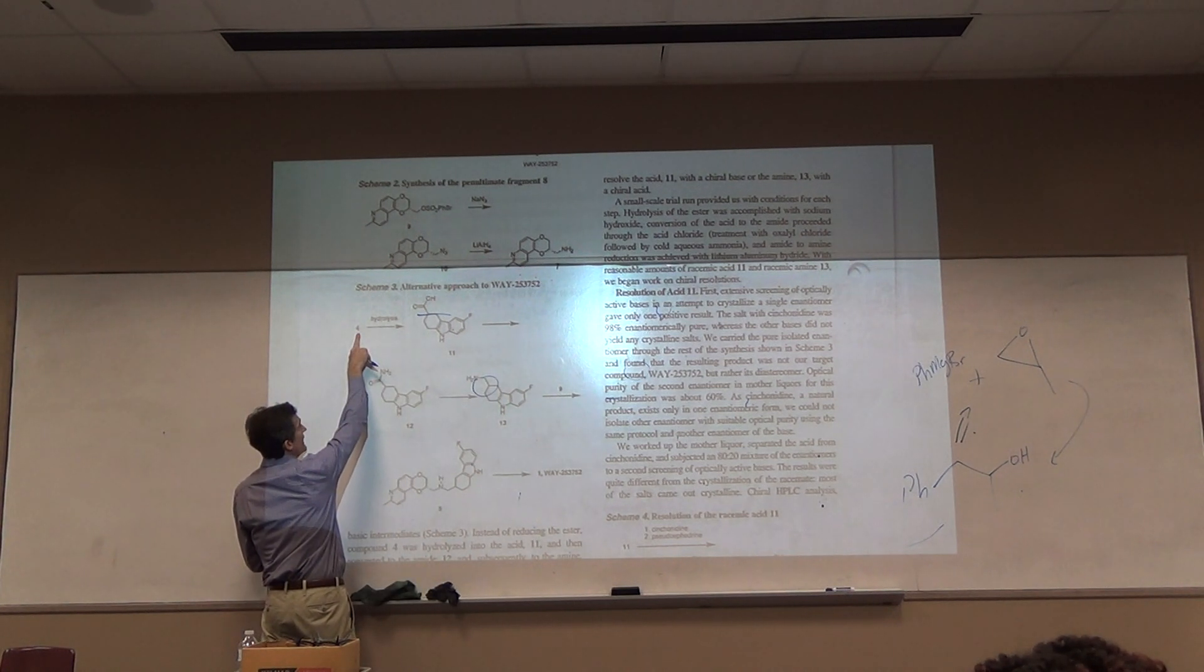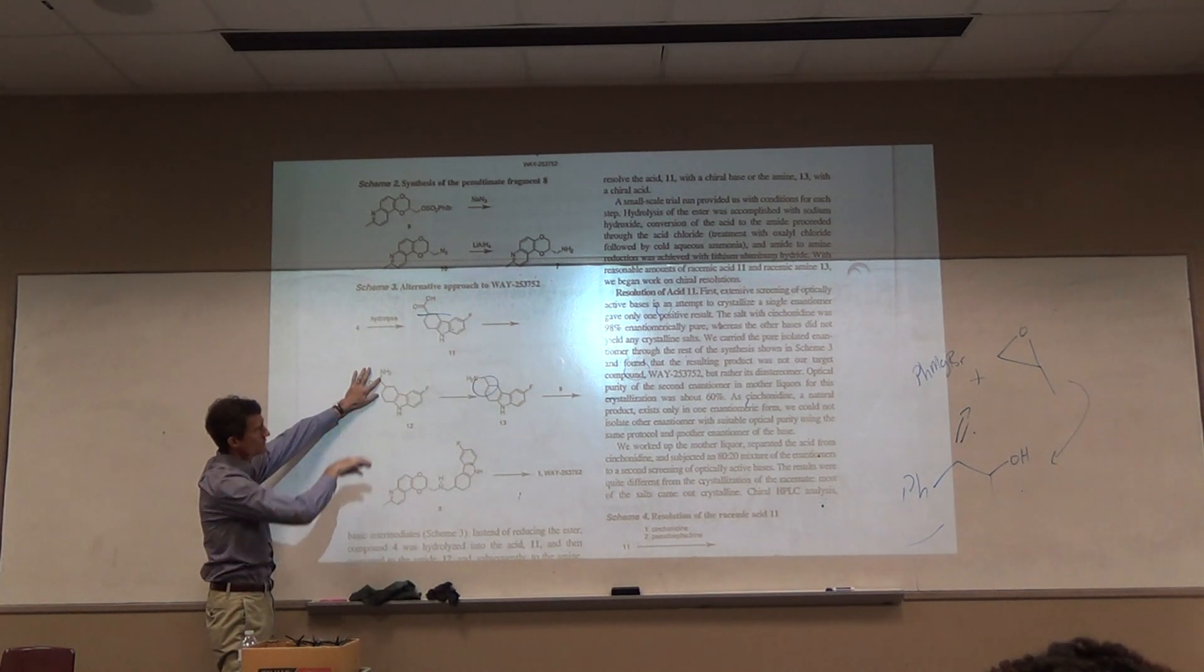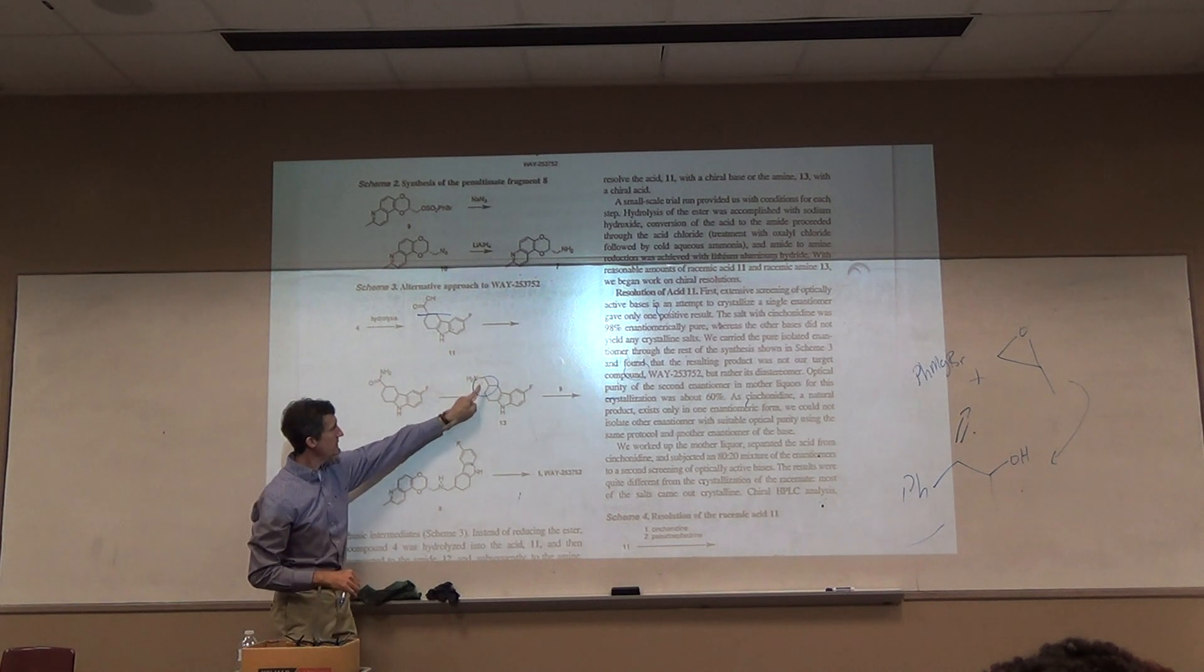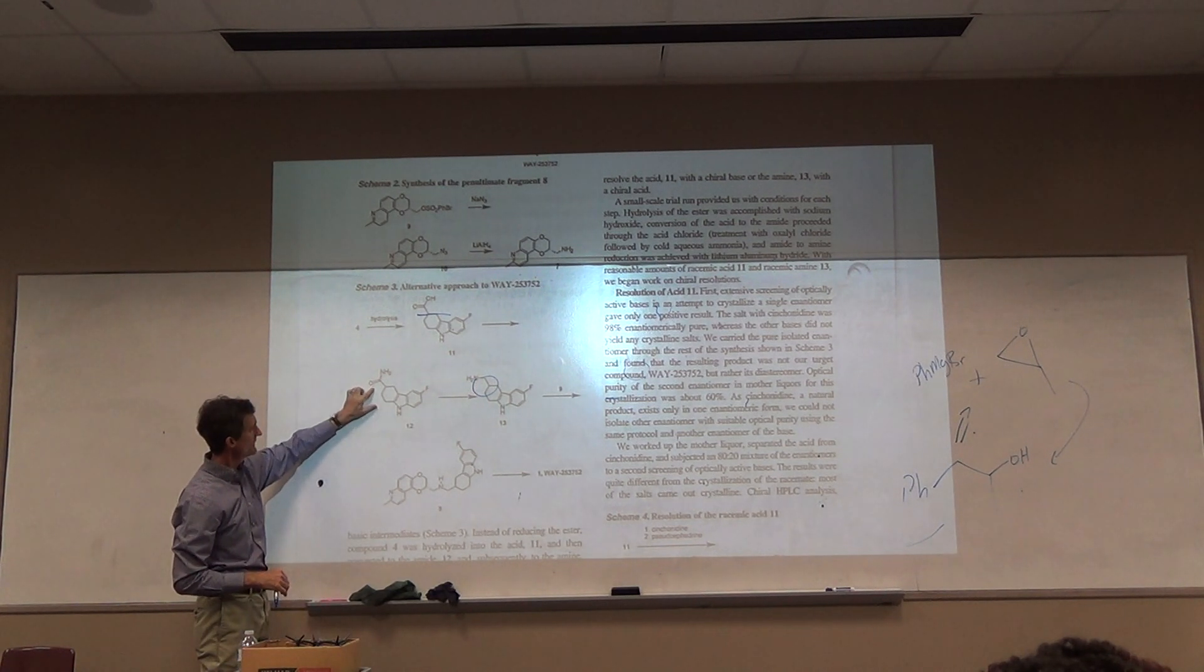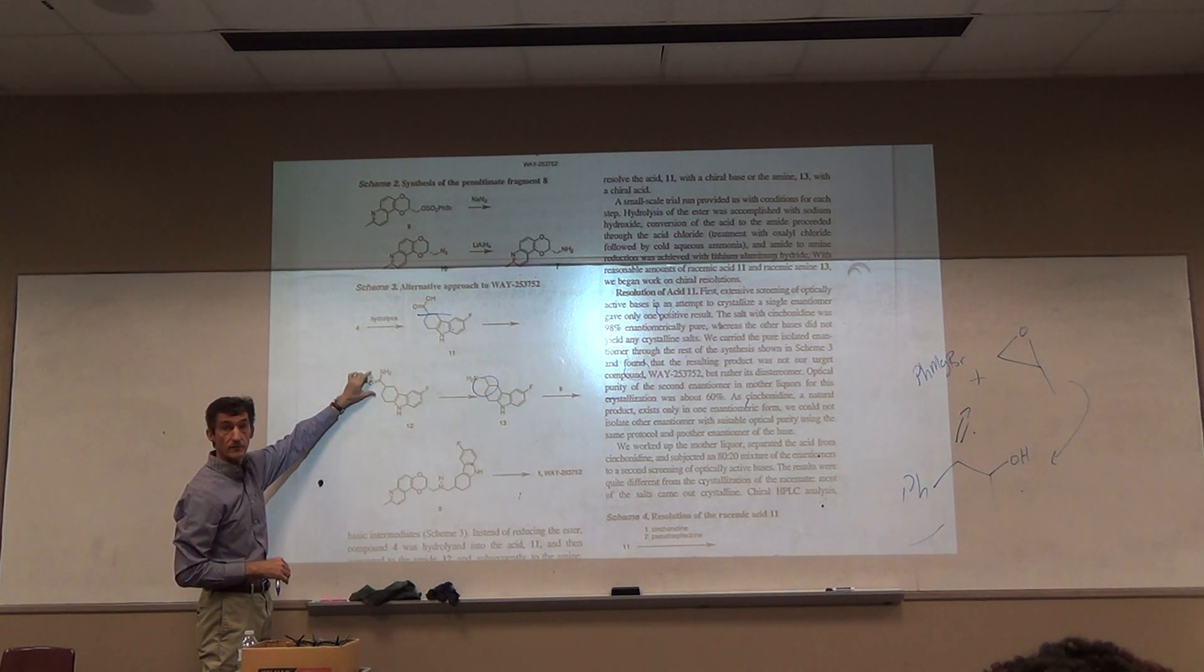This chemistry is pretty straightforward. Four is an ester, they hydrolyze the ester to the acid, they convert the acid to the amide. They're not showing reagents here, maybe they discuss them in the text. The amide is being reduced to the amine. How would you do this? Can we just remove that oxygen? That's LAH.